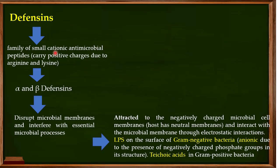So the defensins are positively charged, while the membranes of gram negative and gram positive bacteria are negatively charged — the positive and negative are going to interact with each other. This is similar to the interaction of DNA, which carries a negative charge due to its phosphate groups, and histone proteins, which carry a positive charge due to arginine and lysine residues. The same electrostatic principle applies to defensins and bacterial membranes.